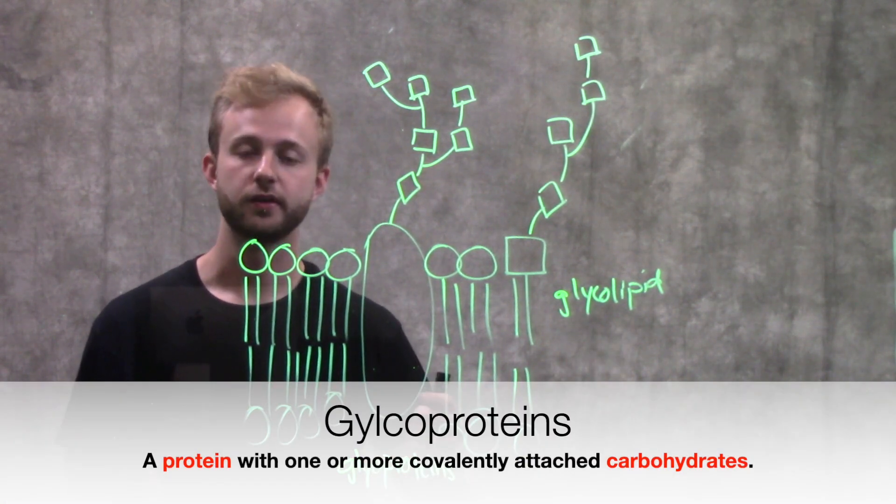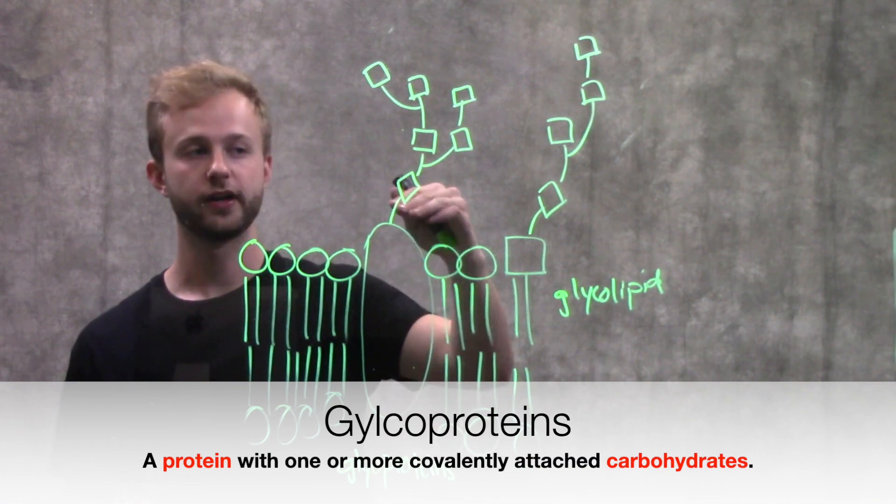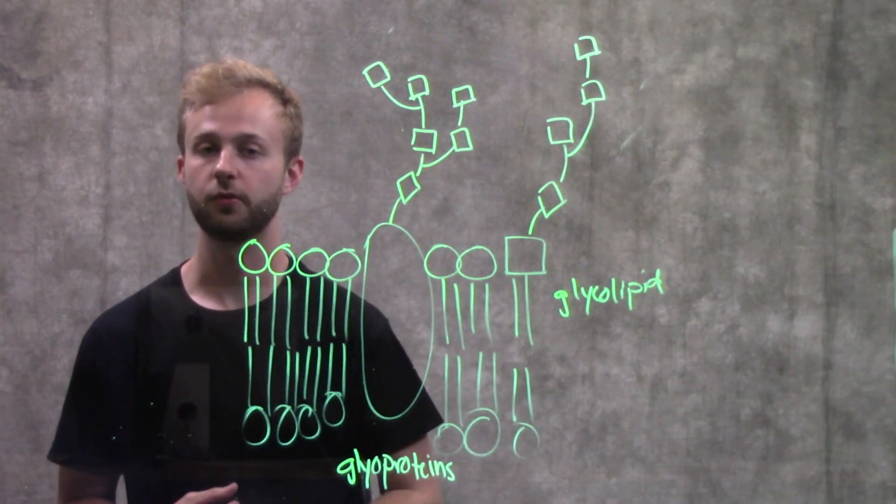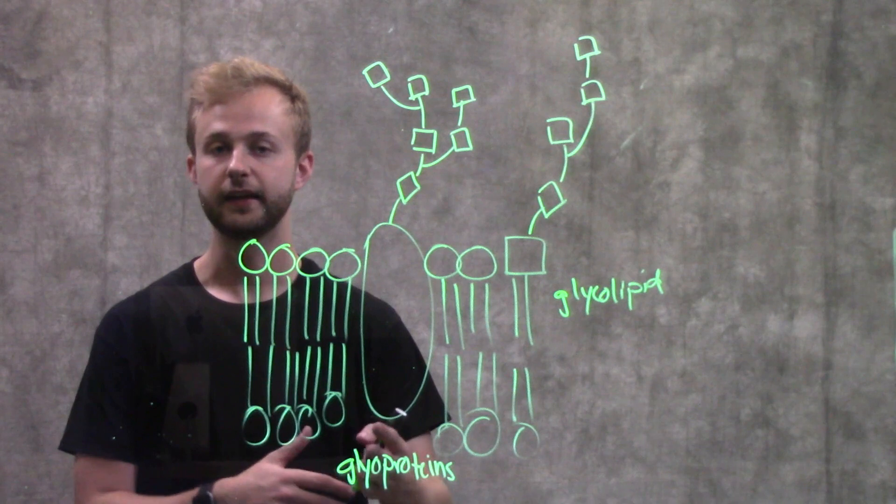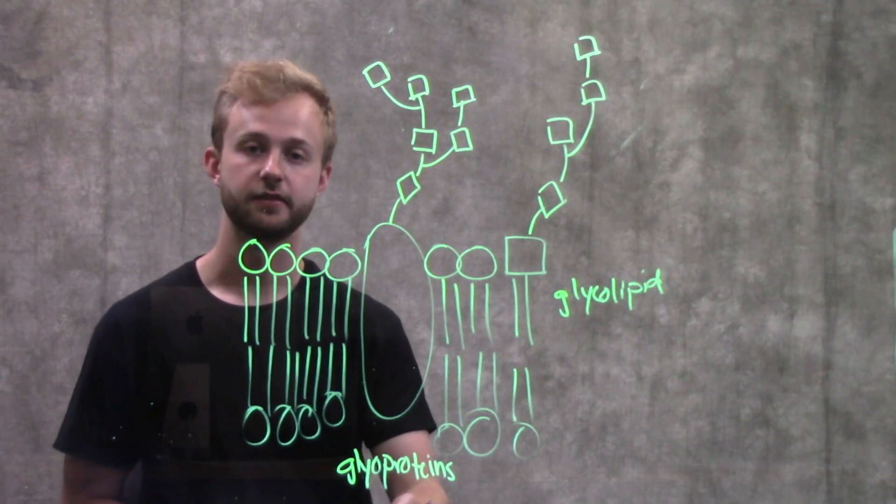In glycoproteins, you have a branched chain of about 15 carbohydrates that is covalently linked to a protein. That's going to form our glycoproteins.